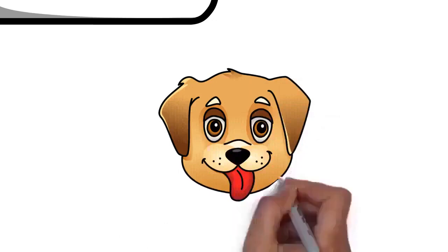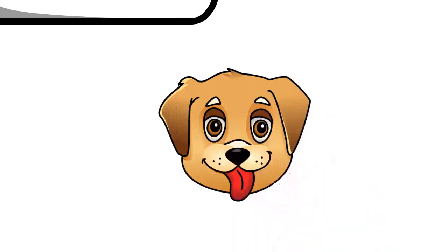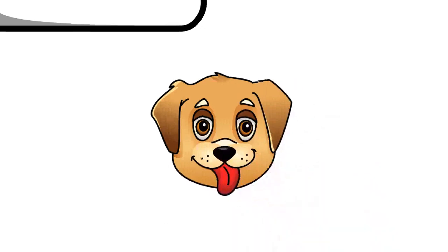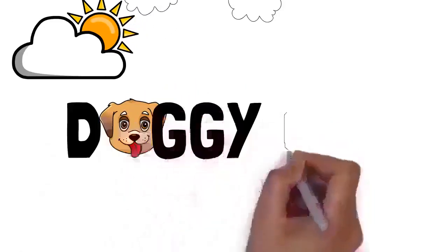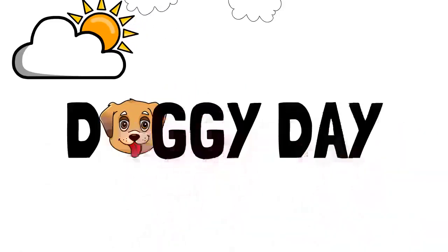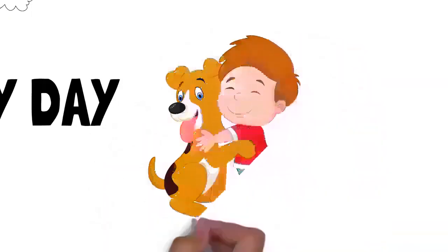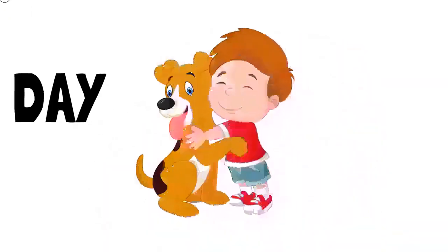If the animal is not claimed within these time periods, it is made available for adoption. Each year, approximately 1.5 million shelter animals are euthanized: 670,000 dogs and 860,000 cats. The number has declined from approximately 2.6 million in 2011.